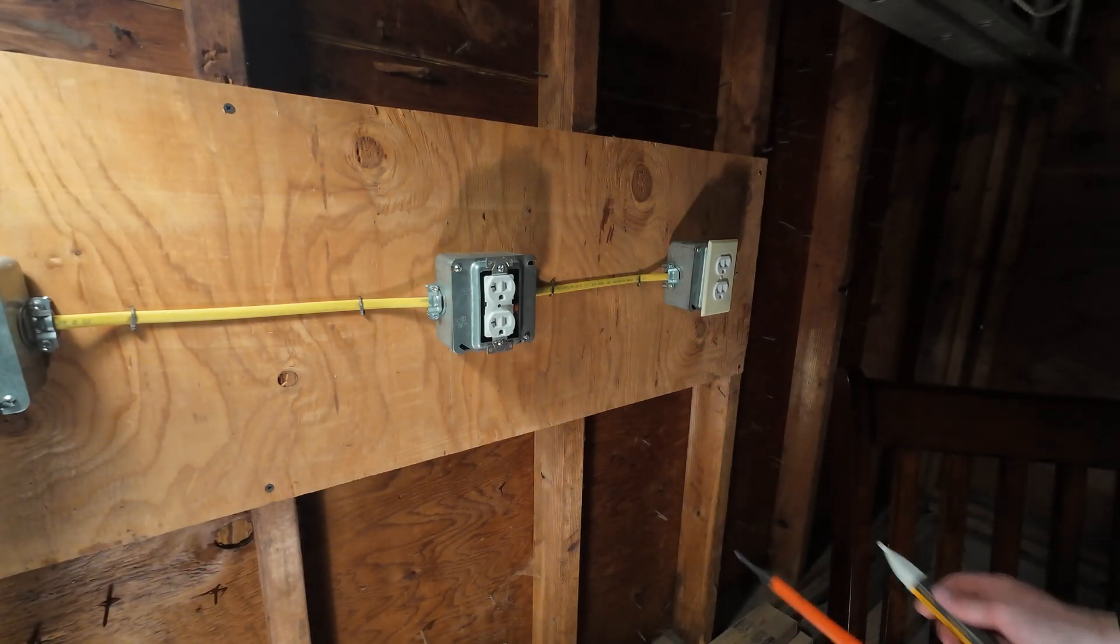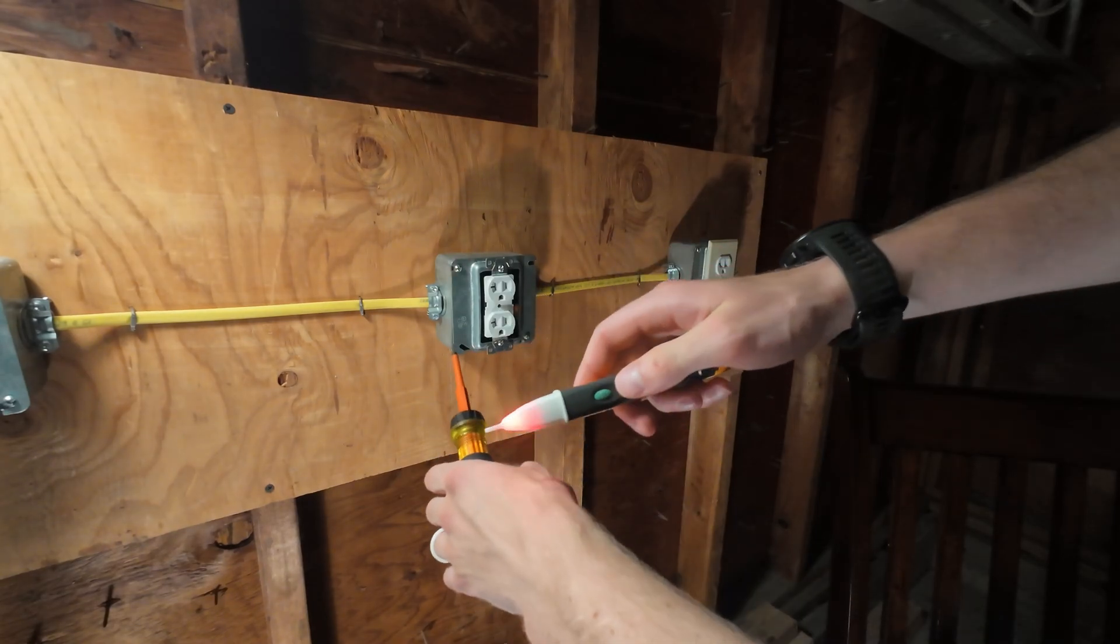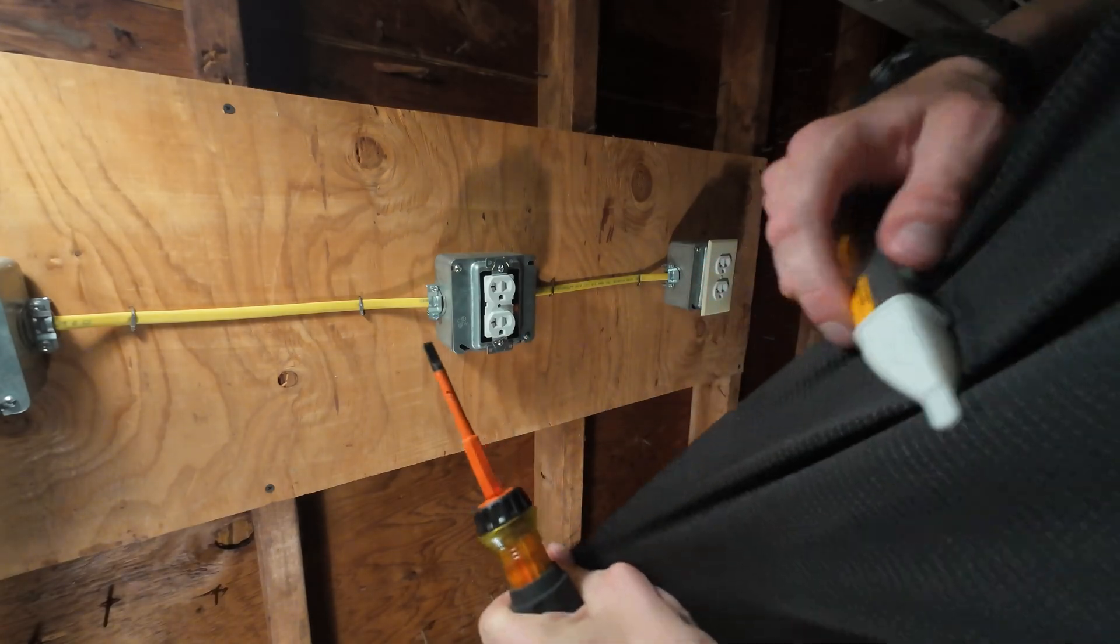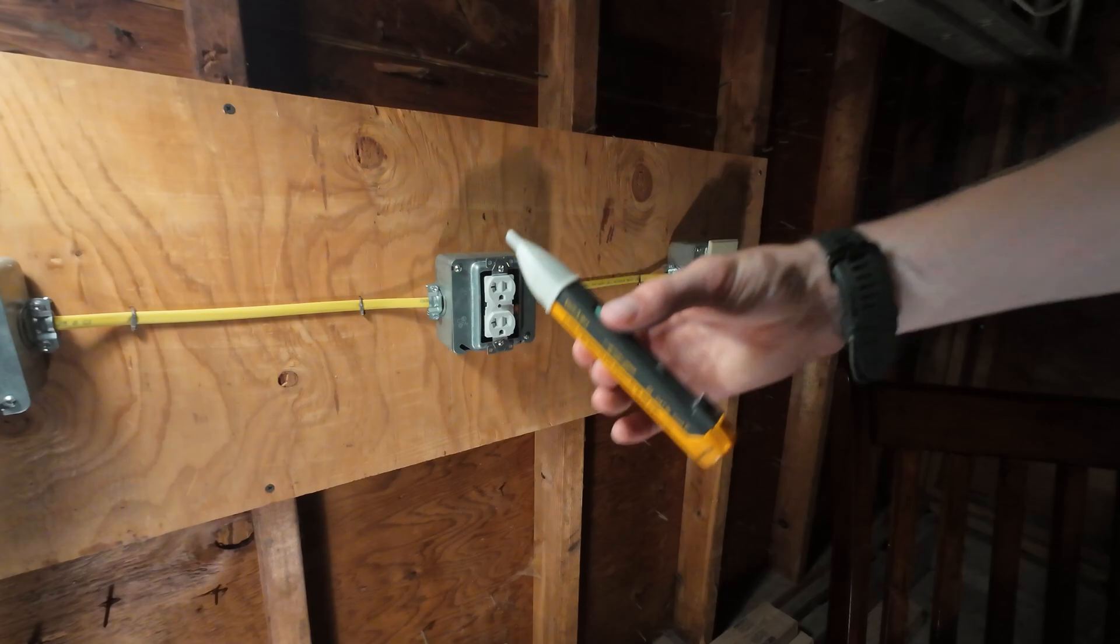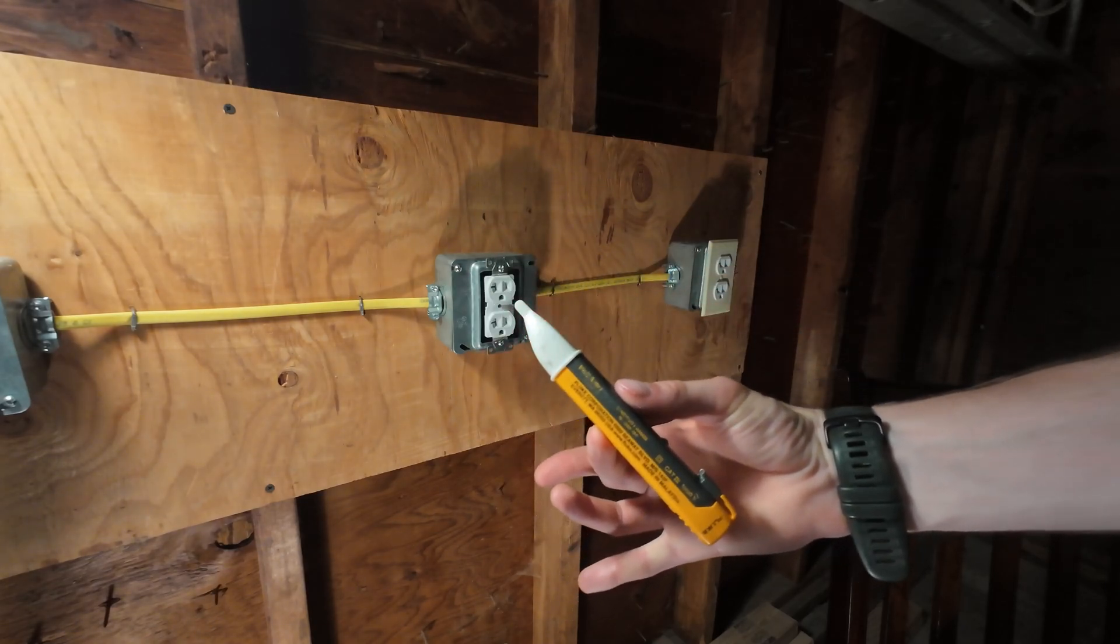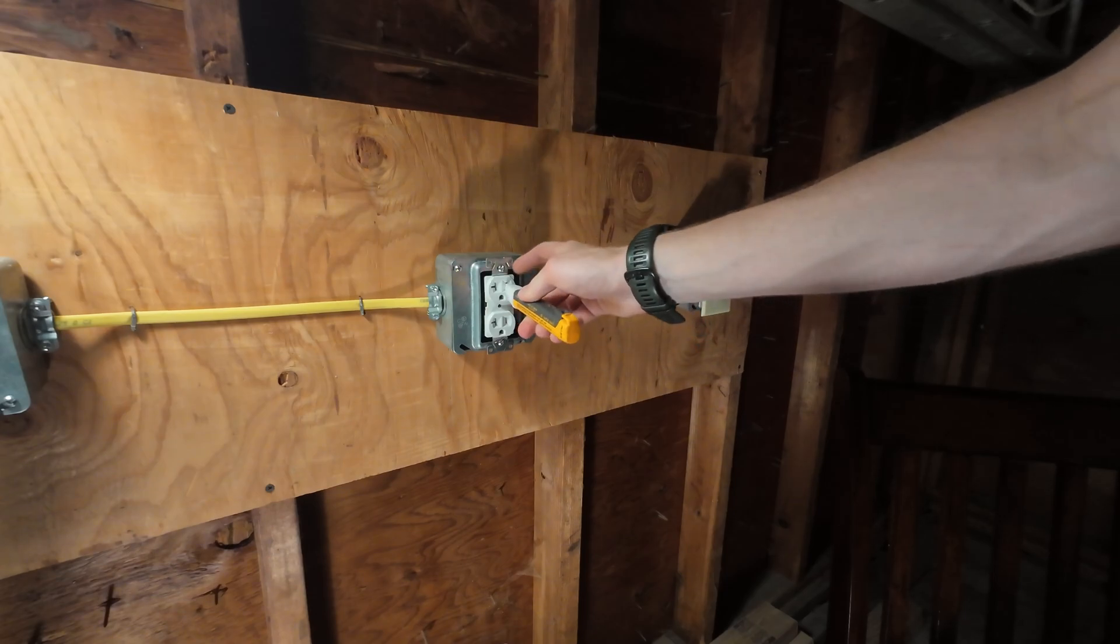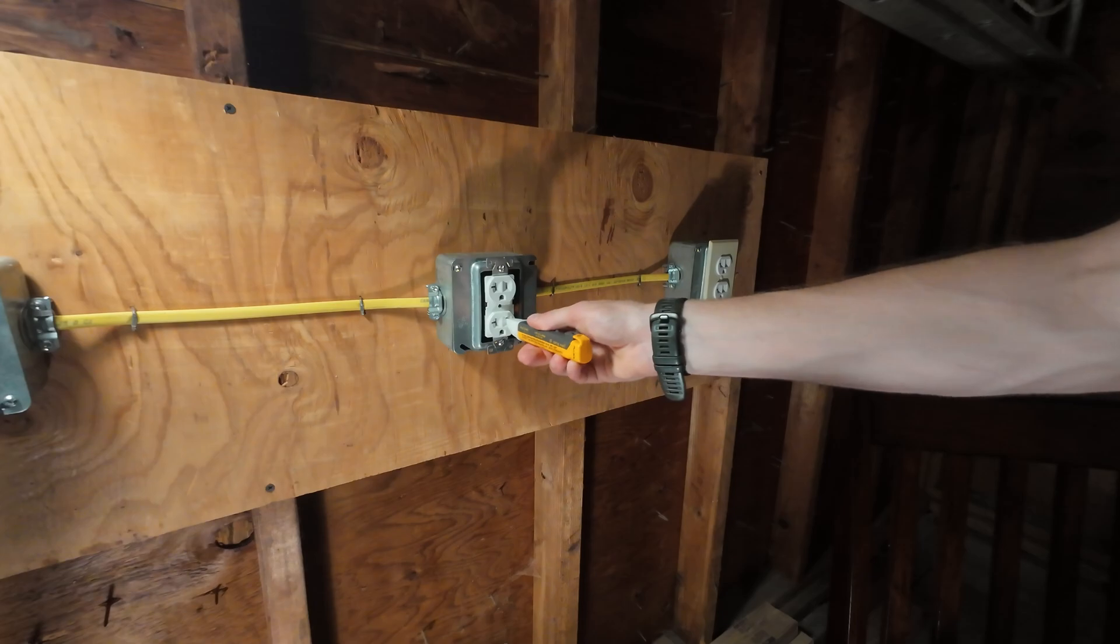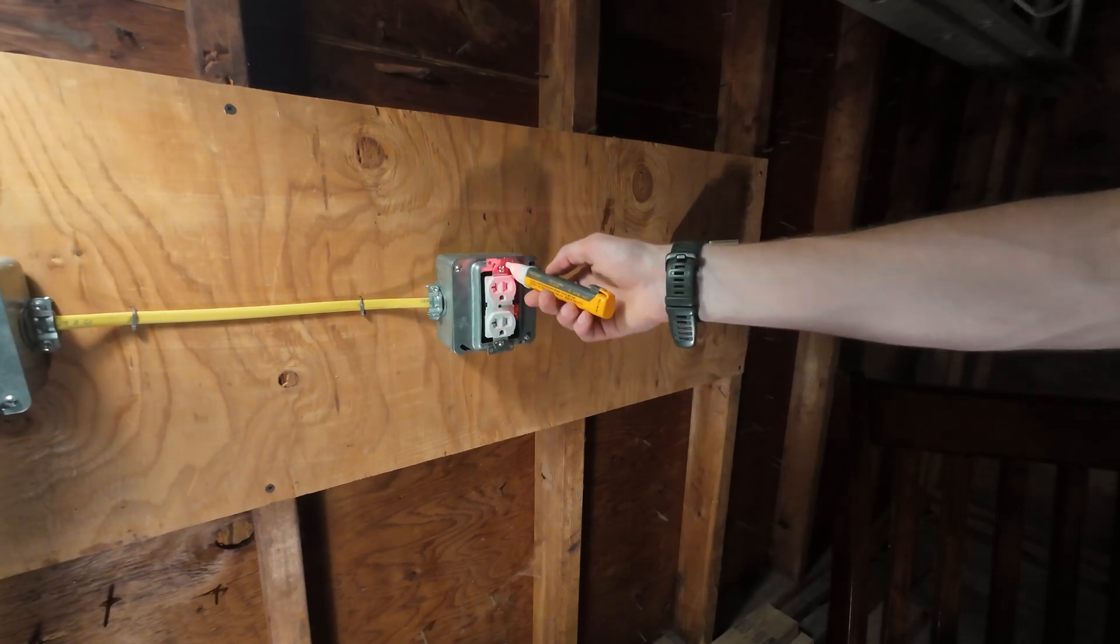Now you can use your non-contact voltage tester in this phase. One way to test it is it'll pick up static electricity. If you rub it against your shirt, hear how it beeped? That's one way to test it to make sure that this tester works. Next, stick it in the hot side, that's the right side. It's not beeping, not beeping on the side. So let's go ahead and loosen these screws up.